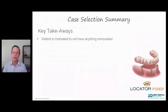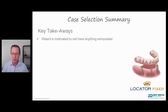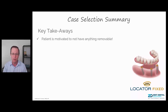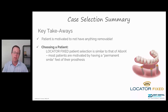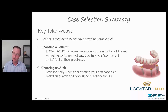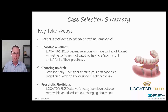Some key takeaways for case selection and what to look out for with your Locator Fixed cases. Number one, make sure the patient is motivated to not have anything removable. Simply ask the patient, 'How do you feel about your teeth coming in and out at night?' If they say that sounds terrible, they're a really ideal candidate for a fixed full arch prosthesis. When choosing a patient for Locator Fixed, we typically try to choose a patient similar to that of All-on-X — most patients are motivated by having a permanent smile feel for their prosthesis. Also, choose an arch and start logically: start with a mandibular arch and then work your way up to the maxillary arch.